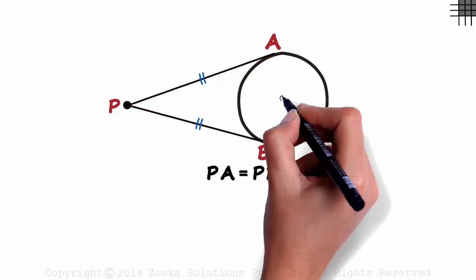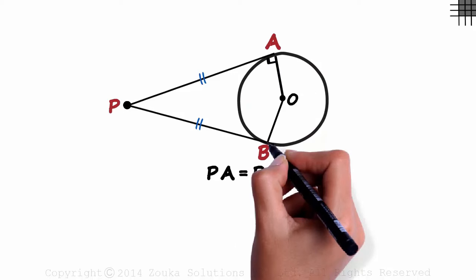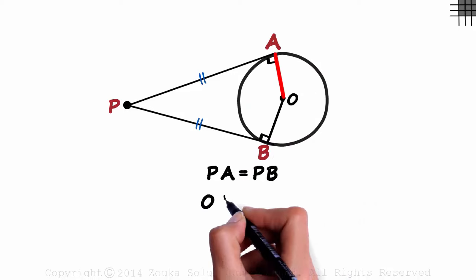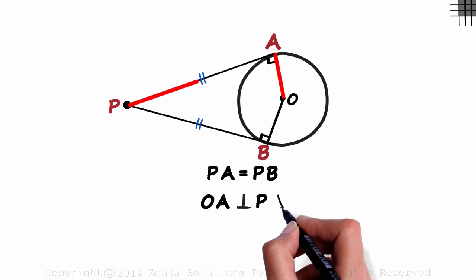And if we draw the radii OA and OB, then we can be sure that OA will be perpendicular to tangent PA.